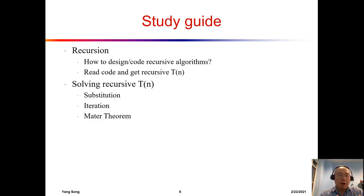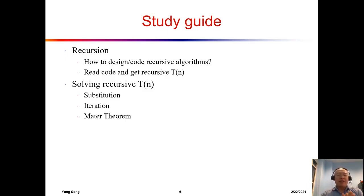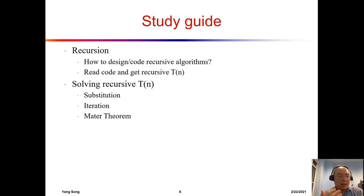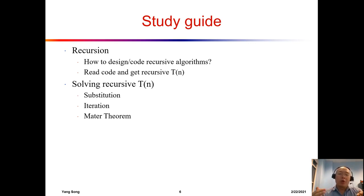The next topic is recursion, which is important because it leads to the master theorem. Without recursion, analyzing algorithms would be much easier. For designing recursive algorithms, there are two mindsets: divide and conquer (like merge sort) and getting one step closer. You should be able to analyze and write pseudocode for both types.